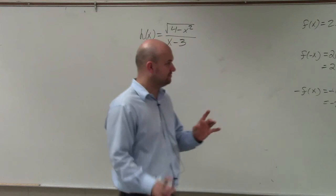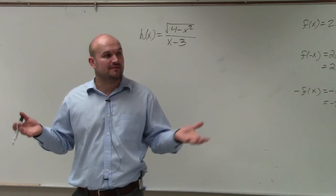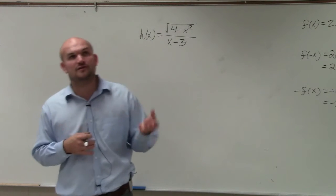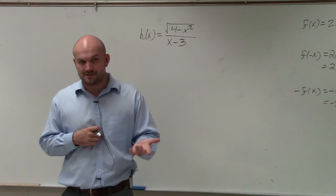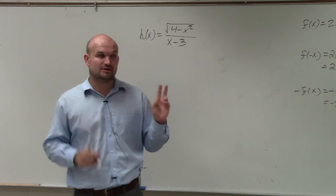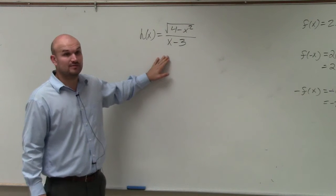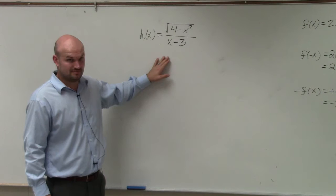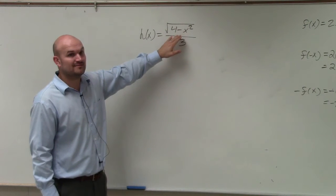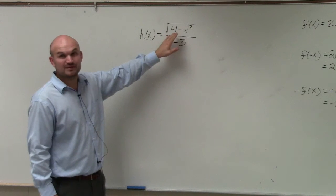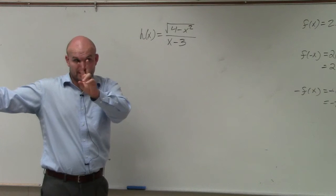So we talked about a function. The implied domain is going to be all the values for x that provide a real number answer. And we talked about two restrictions. Those two restrictions are: if you have a value that makes the denominator 0, that value is not defined for the function. If you have a value that makes the radicand negative for an even root, that value is not defined. So there's two restrictions that we went over in that last class period.